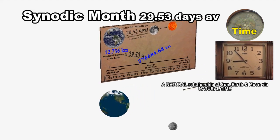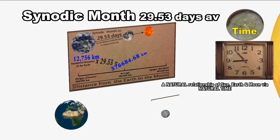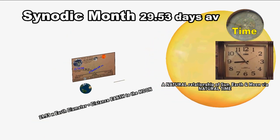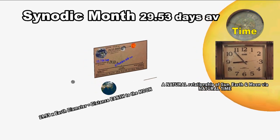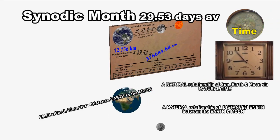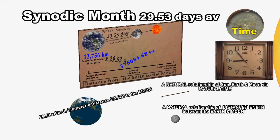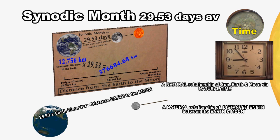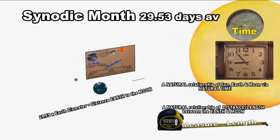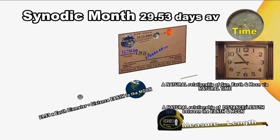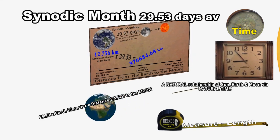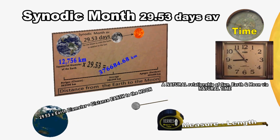But it goes further than that. Time is a measure, and length is a measure. If you multiply the diameter of the Earth by 29.53, you get the distance from the Earth to the Moon — a natural relationship of length between the Earth and the Moon, via the natural relationship of time of 29.53 days, which is a Sun, Earth, and Moon relationship. Here we have one lovely symphony of coincidences: this balanced relationship via the full moon synodic month of 29.53 days.